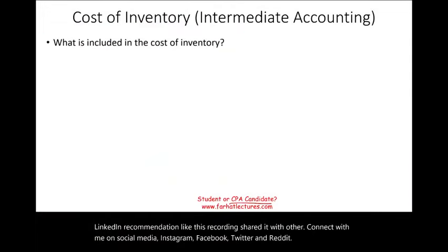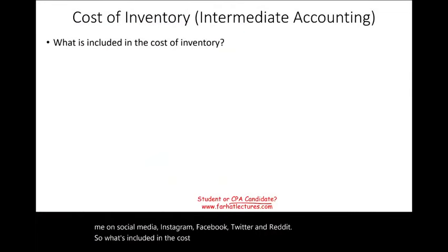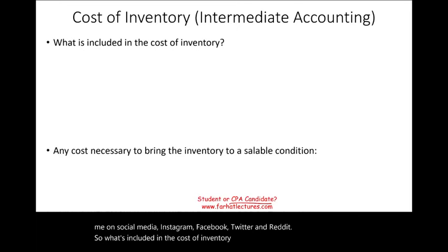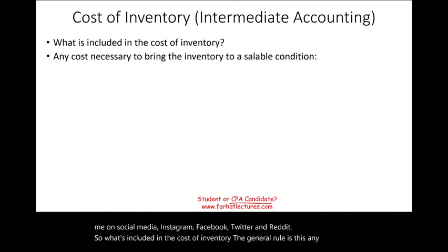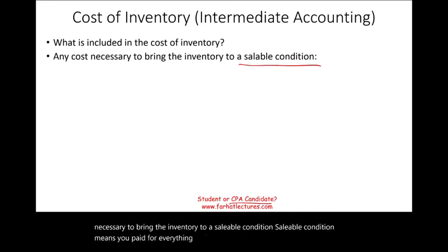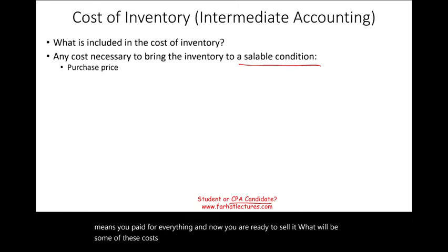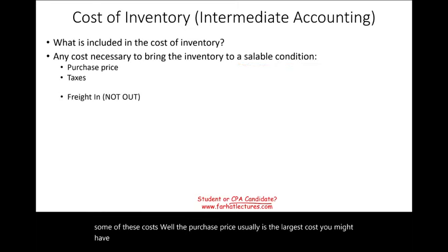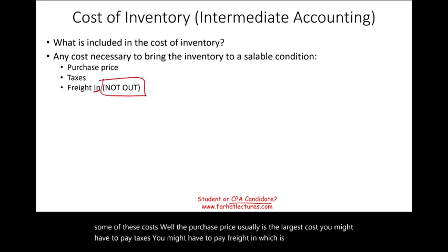So what's included in the cost of inventory? The general rule is this: any cost necessary to bring the inventory to a saleable condition. Saleable condition means you paid for everything and now you are ready to sell it. Some of these costs include the purchase price, which is usually the largest cost. You might have to pay taxes, and you might have to pay freight in, which is transportation — not freight out.